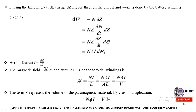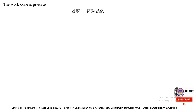Substituting the value of N·A·I equal to V·H into the work equation, we simplify and get DW equal to V·H·dB. This is the work equation for changing the magnetization of a paramagnetic material.